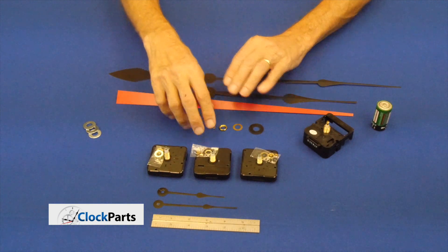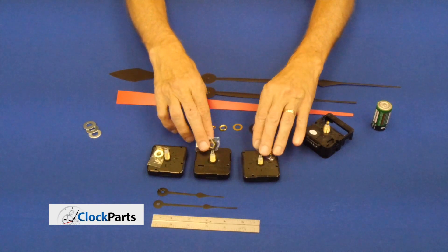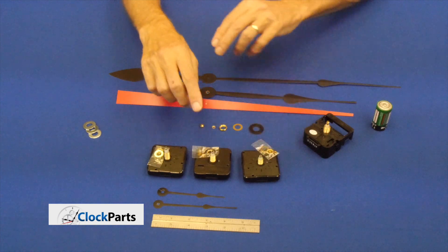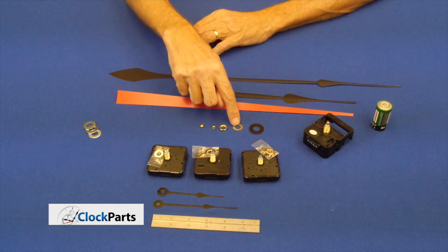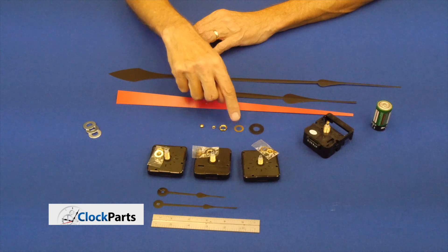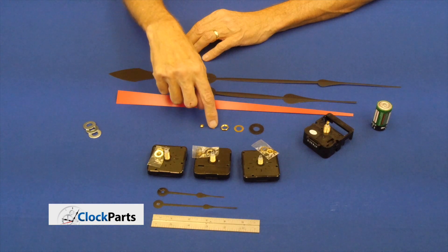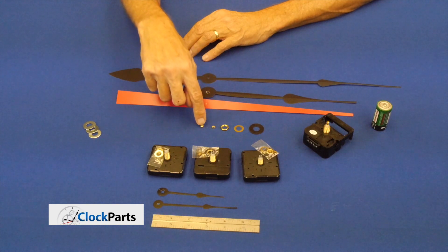Now with each motor, you're going to get a pack of hardware. In that hardware is one, a rubber washer; two, a brass washer; three, a hex nut; four, a minute hand nut; and five, a cap nut.